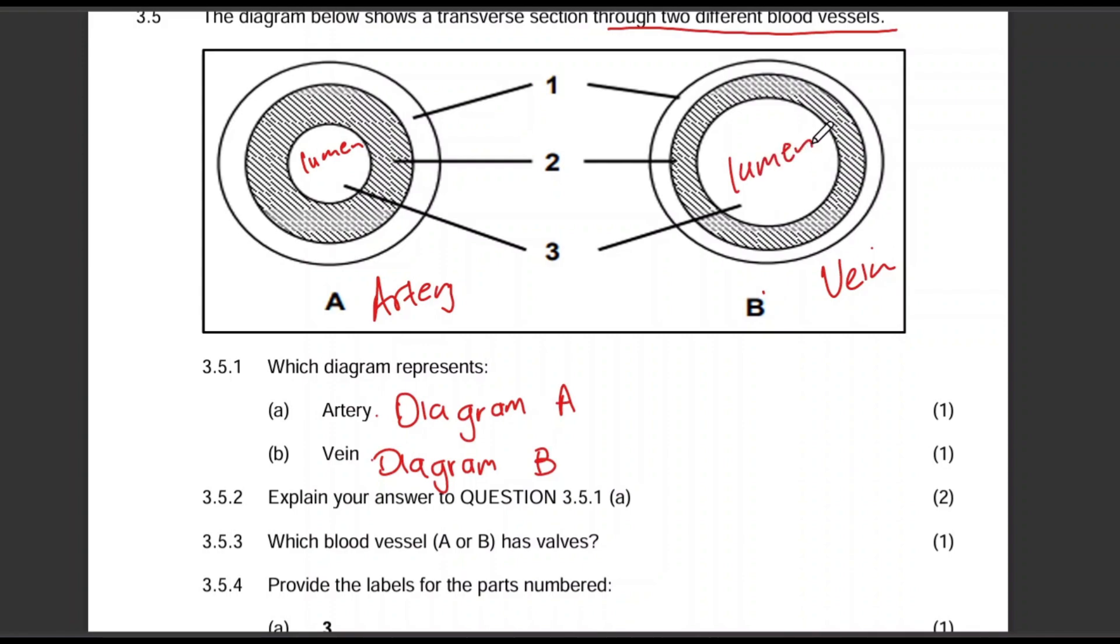So the lumen, or the diameter of the lumen, I think that's how you need to phrase it, for the artery is obviously very small or it's smaller compared to the diameter of the lumen in the vein. And blood flows at a very high pressure in the artery due to obviously a smaller diameter compared to blood flowing through a vein.